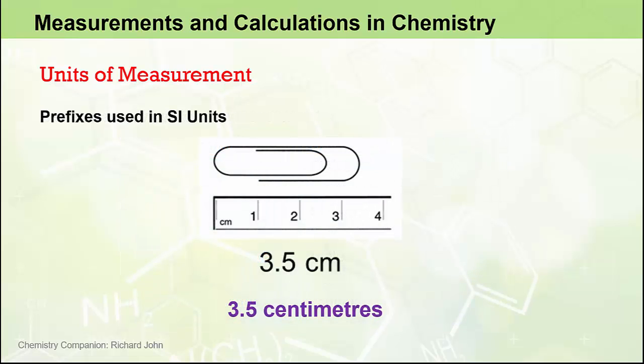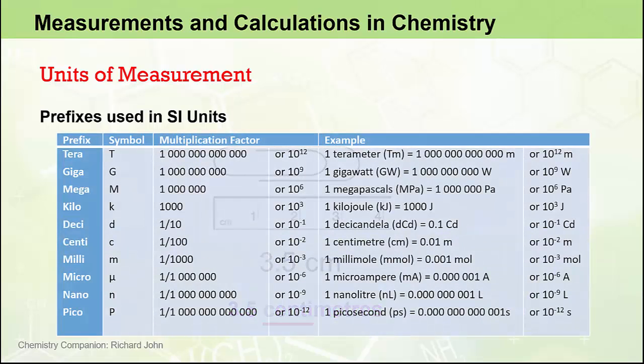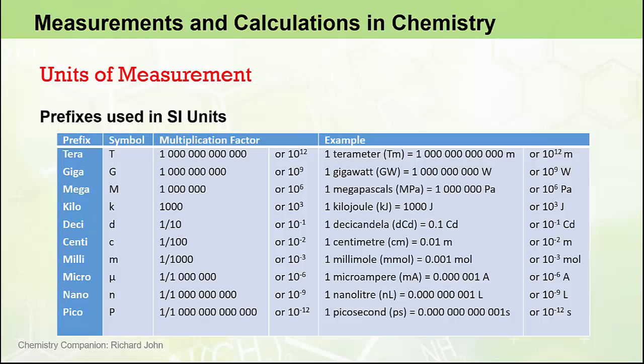Now, you'll recall when we made that measurement of our paper clip, we said it was 3.5 centimeters in length. So the length was reported not with reference to the base unit of meters, but with the prefix centi. And there is a whole bunch of prefixes we need to remember and understand in science and in chemistry.